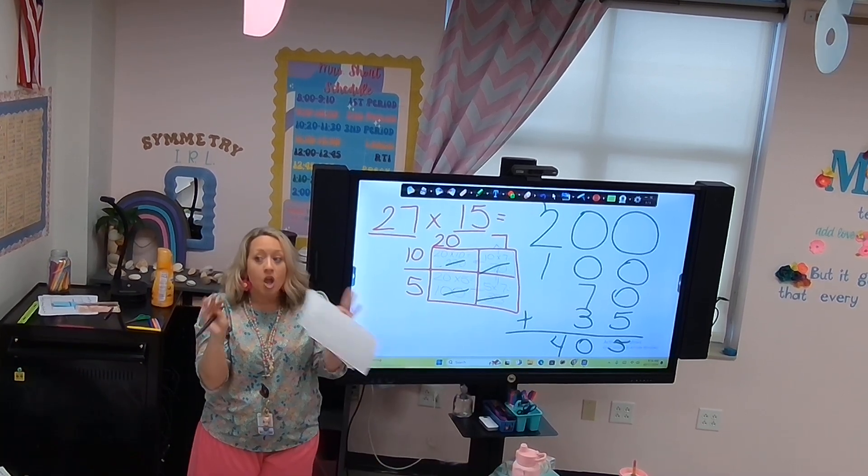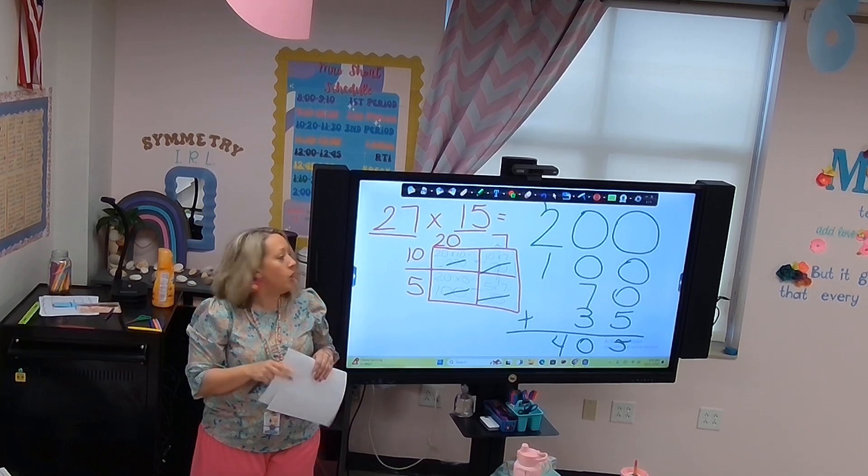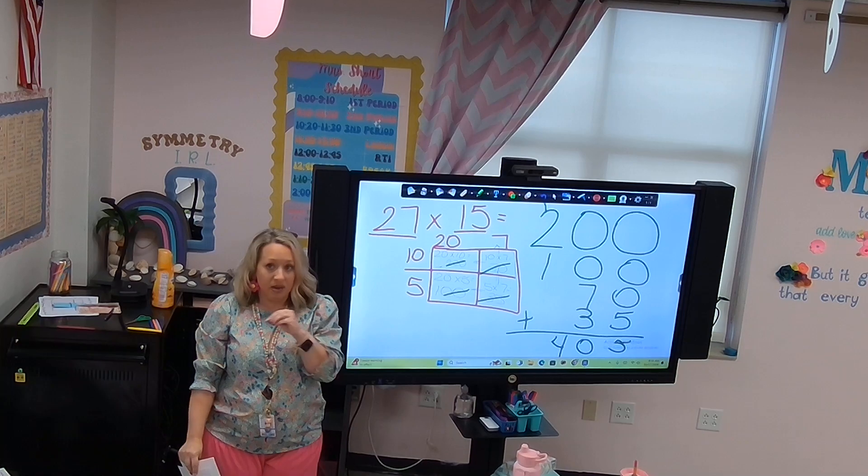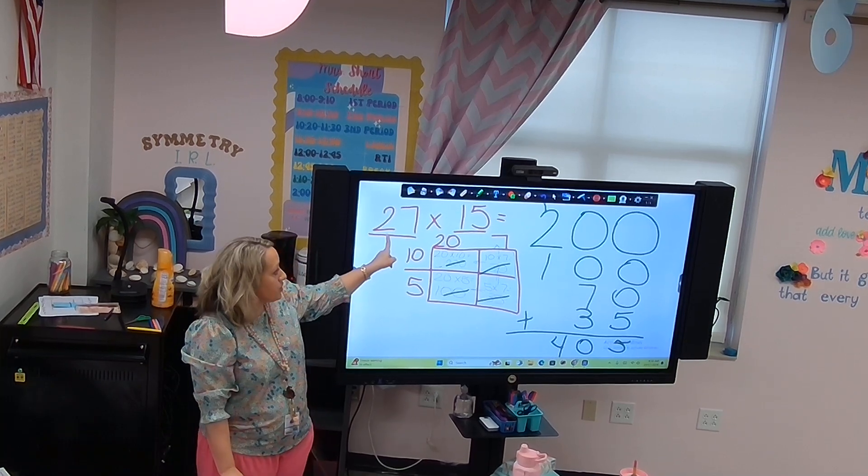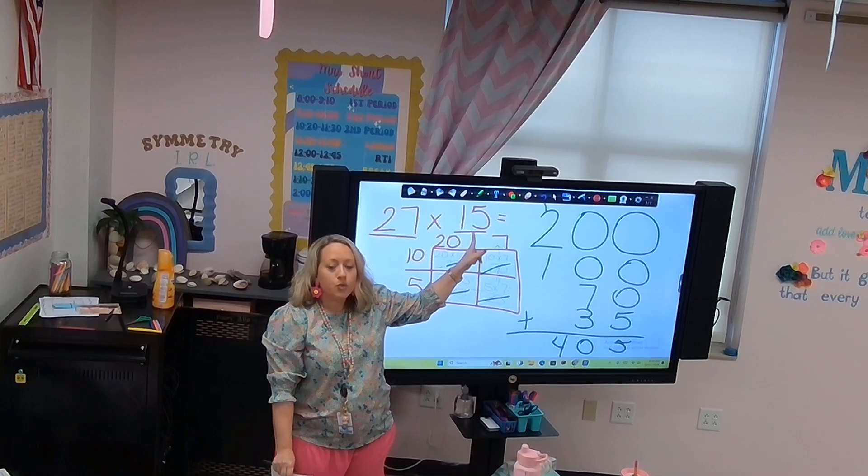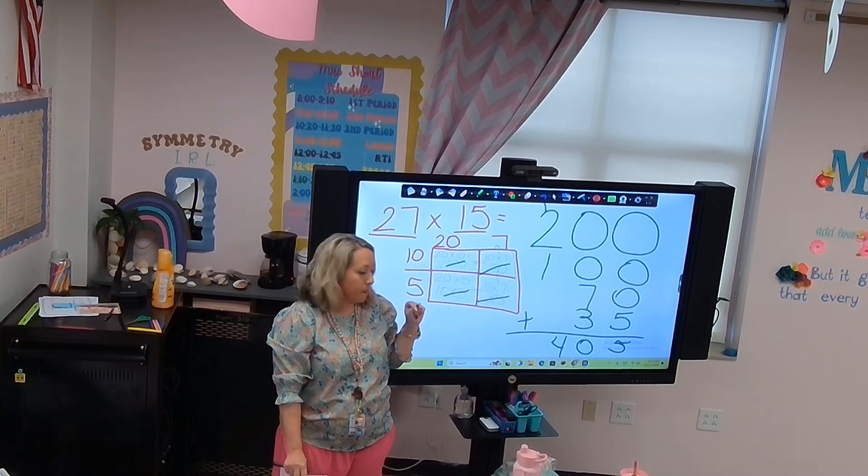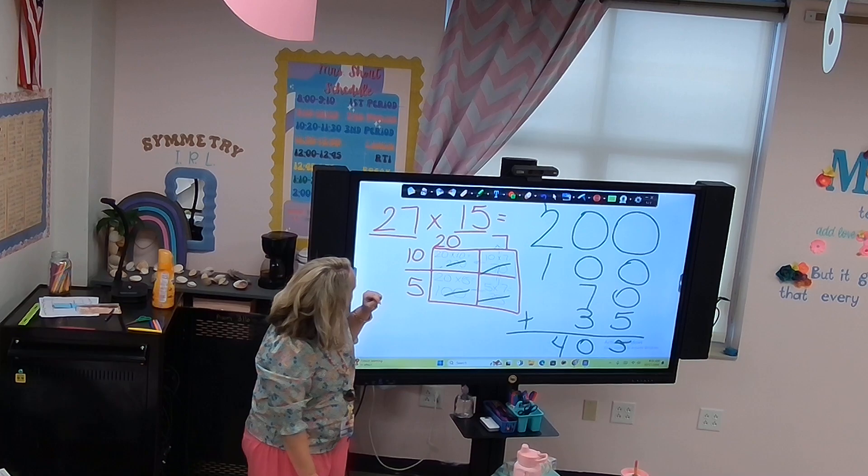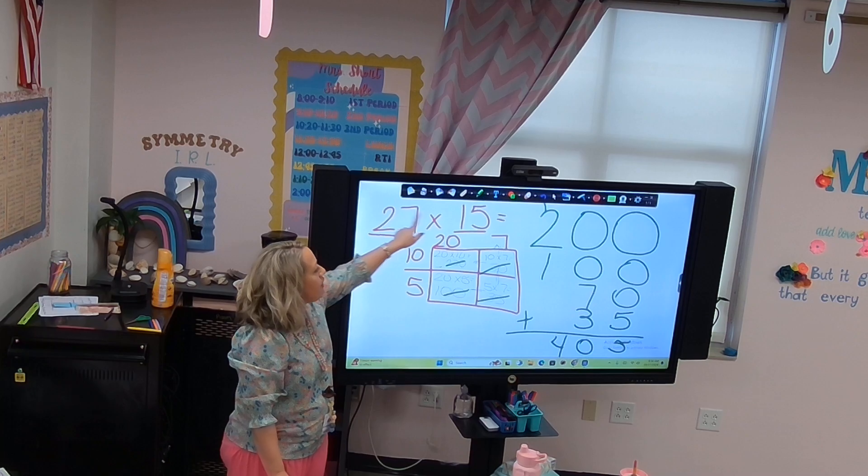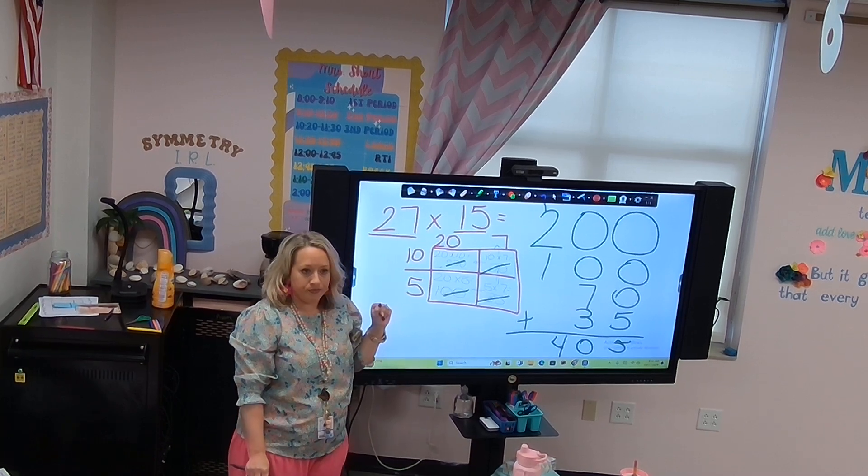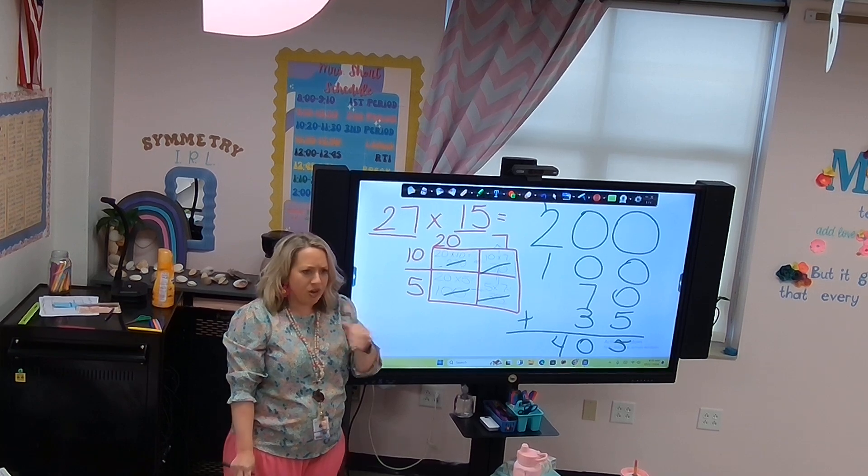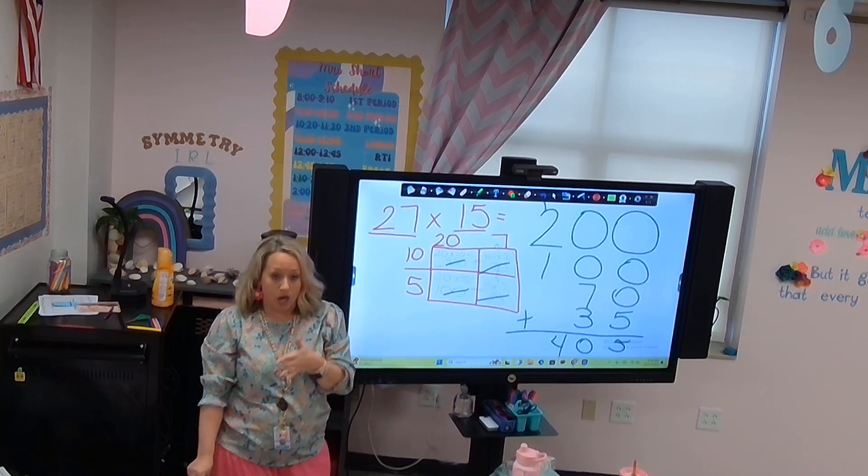Before we stop, we are going to see if this is a reasonable answer. What would this round to? 30. And this? 20. Okay. What's 30 times 20? 600. That's not very close to that. Because how far away are we from our numbers? 3 and 5, or 8 away. That's not good. So in this case, we're going to use compatible numbers.